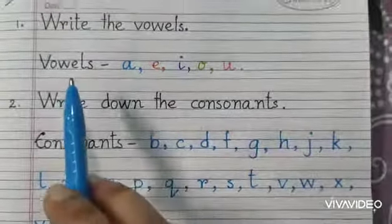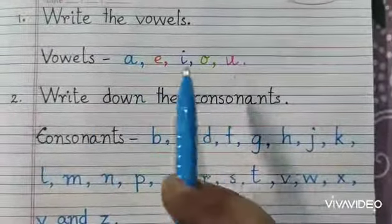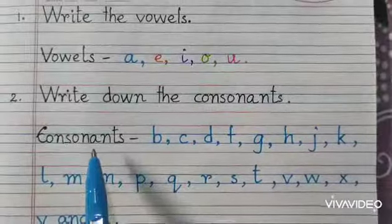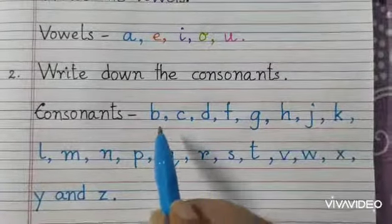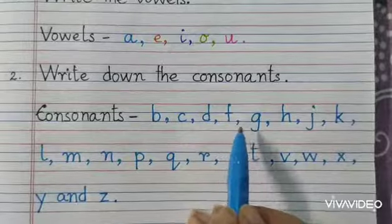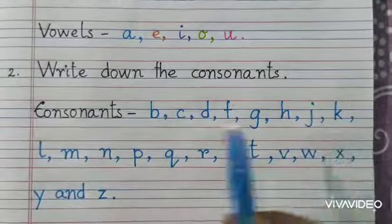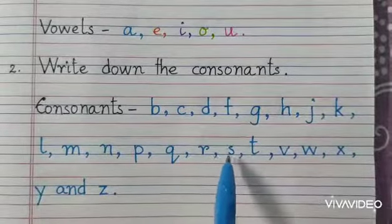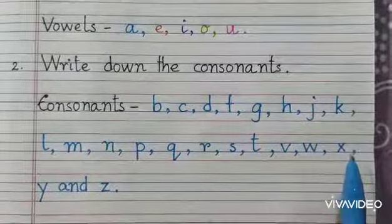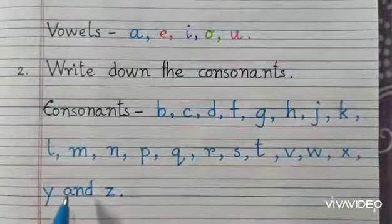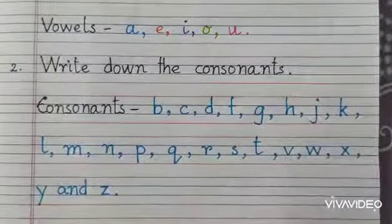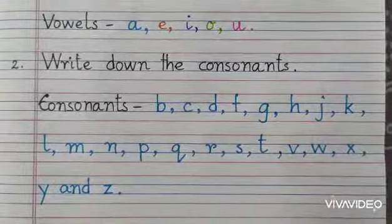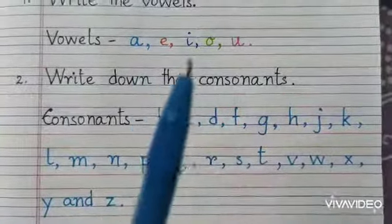So here you can see vowels are 5 letters: A, E, I, O, U — and consonants are 21 letters. Count them: 1, 2, 3, 4, 5, 6, 7, 8, 9, 10, 11, 12, 13, 14, 15, 16, 17, 18, 19, 20, 21. So consonants are 21 and vowels are 5. Remember it.